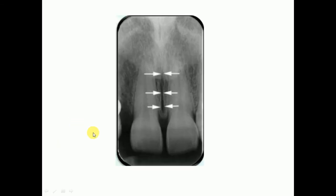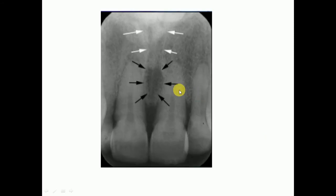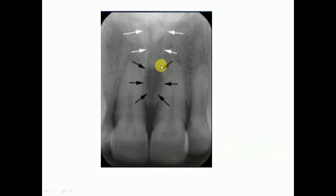Then we have the incisive foramen, also called the anterior palatine foramen. It appears as a round, oval, diamond-shaped, or heart-shaped radiolucency that is well defined on occlusal and periapical radiographs. The position of the foramen on the radiograph ranges from between the roots of the central incisors close to the alveolar ridge to the level of the apices. Variability in position is due to angulation of the X-rays.